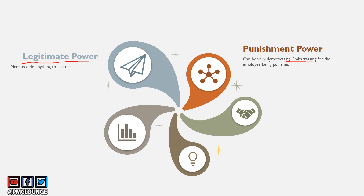Second is punishment power, also called coercive power. This can definitely be very demotivating and embarrassing for the person being punished. This is not a type of power you should look forward to using, but it's also not something that can be avoided at all times. There will be situations when you have to use coercive power, and it is important to do it one-on-one, in private.